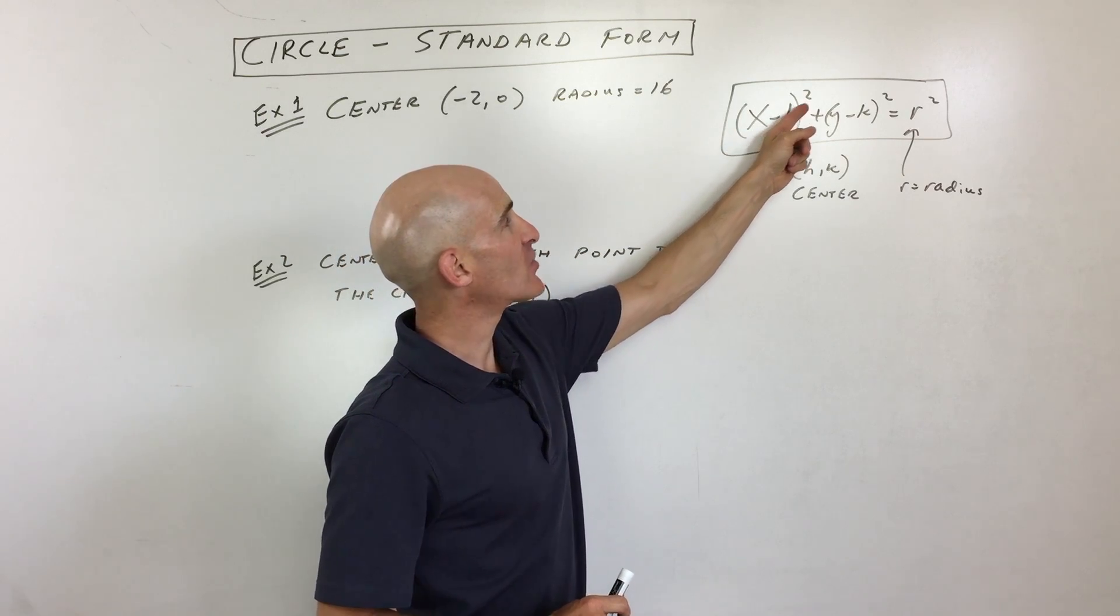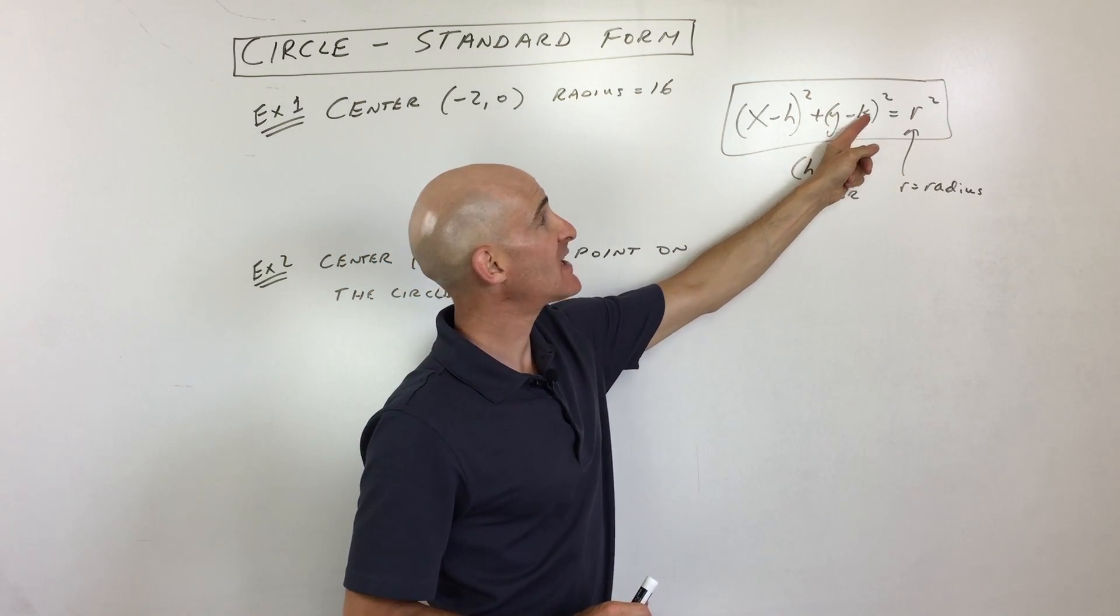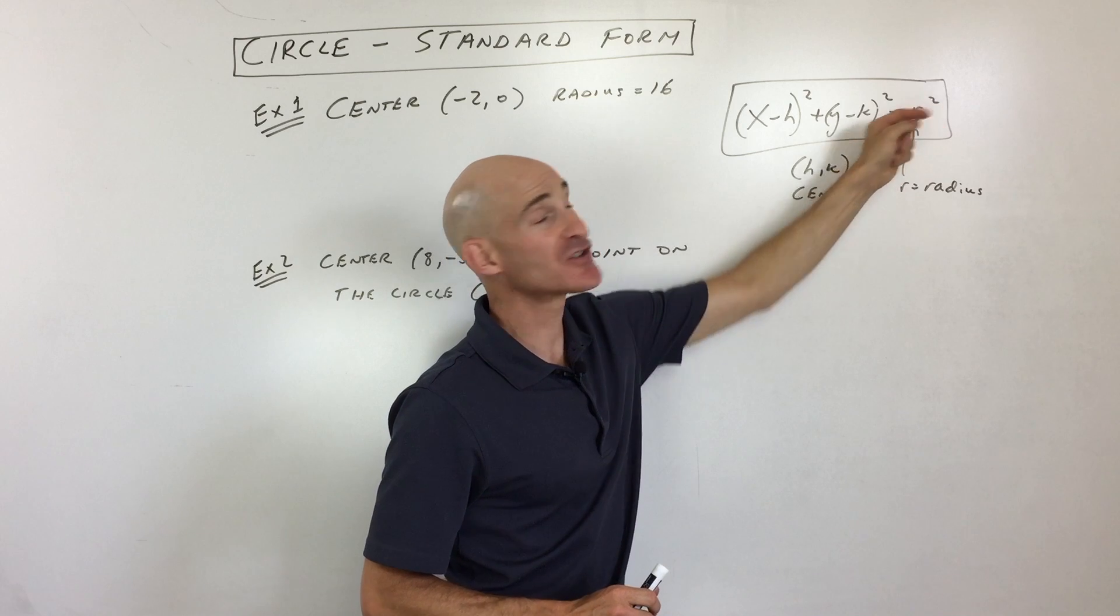What you want to memorize: x minus h the quantity squared plus y minus k the quantity squared equals r squared.